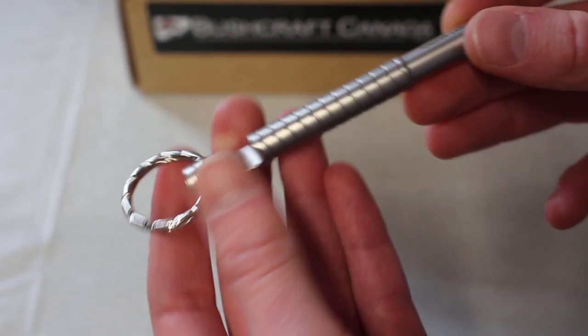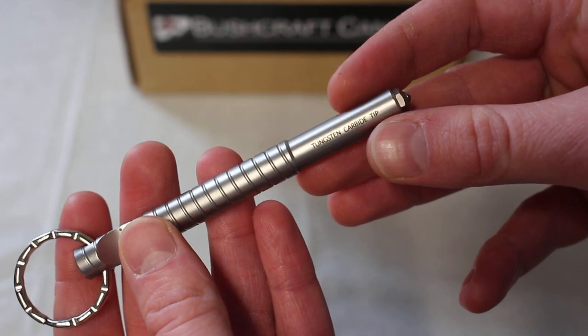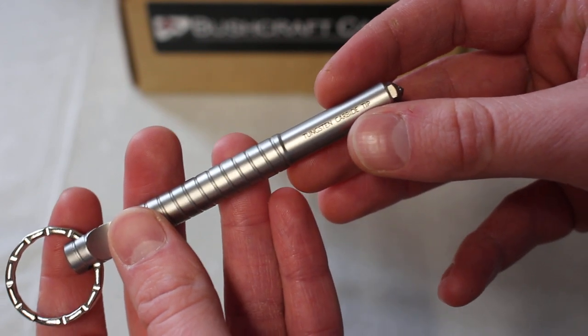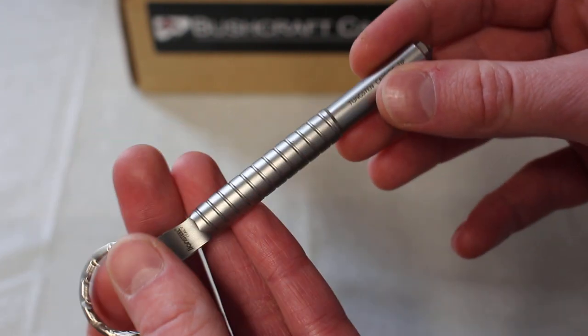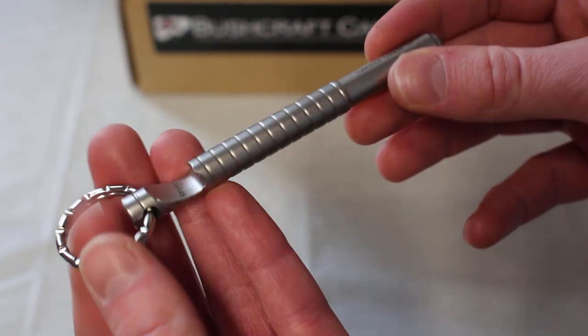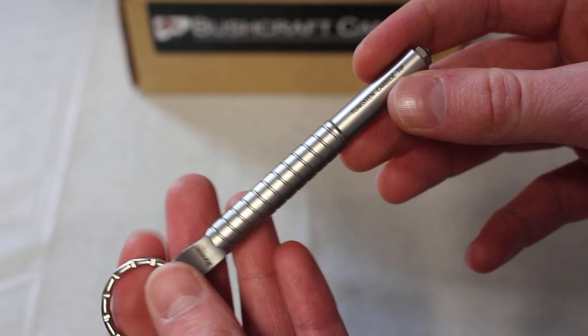On the other end it has a tungsten carbide tipped glass breaker. Tungsten carbide is approximately about twice the density of regular steel, and that's why it's obviously so good as a point for a tool like this.